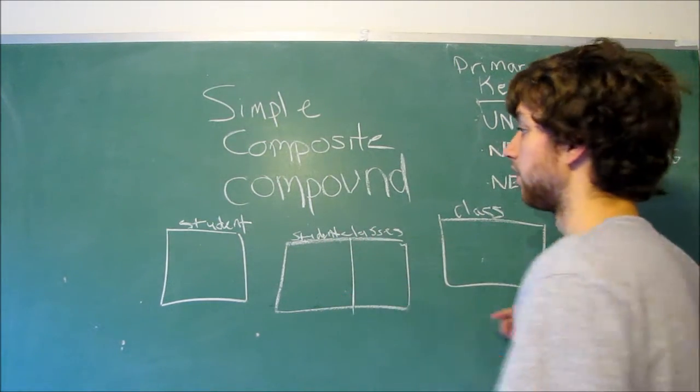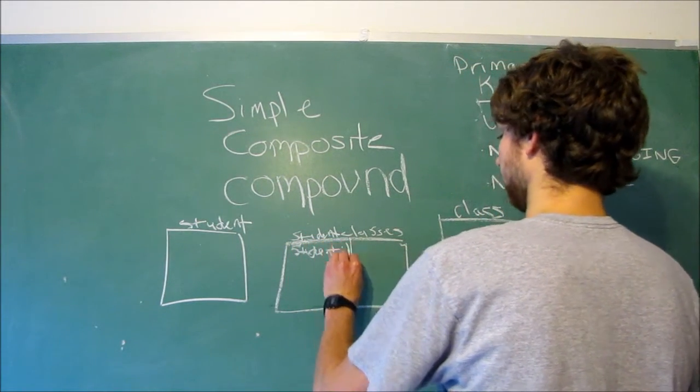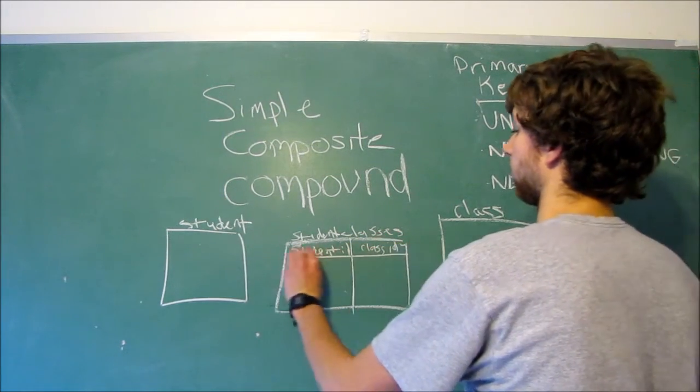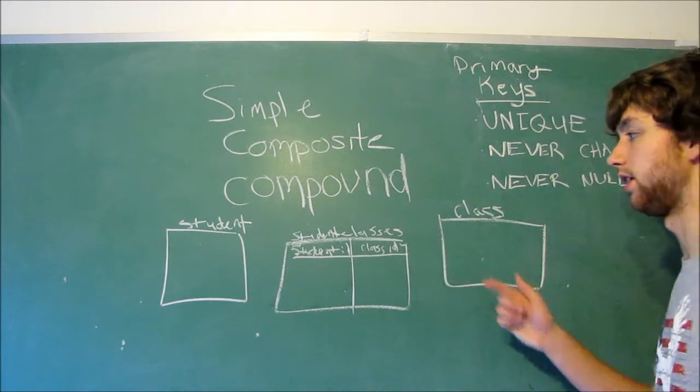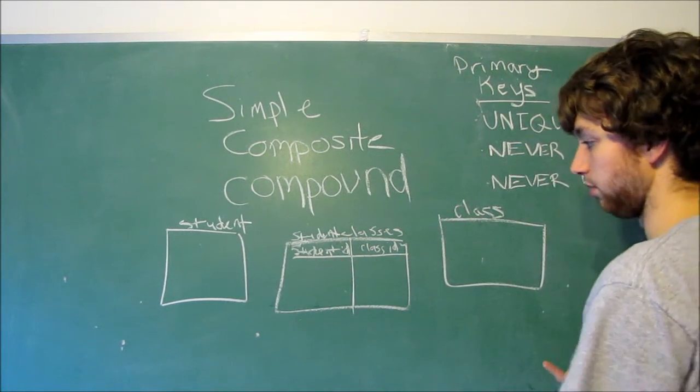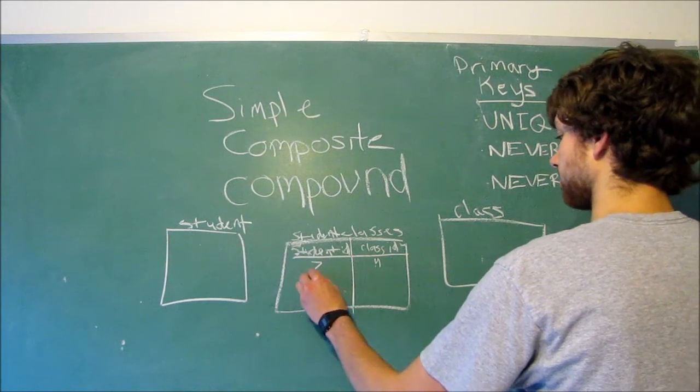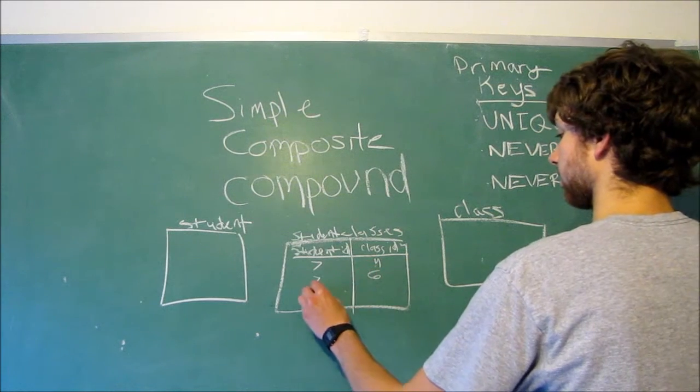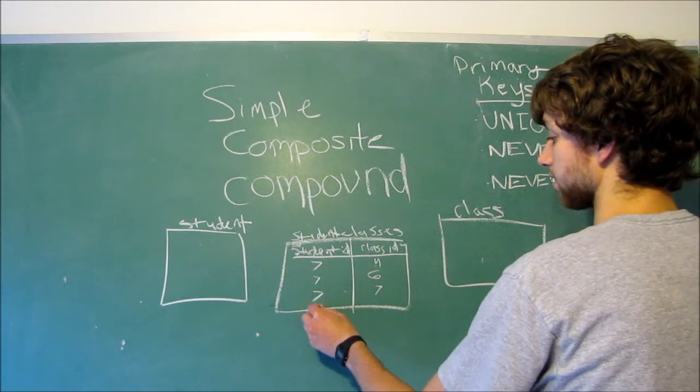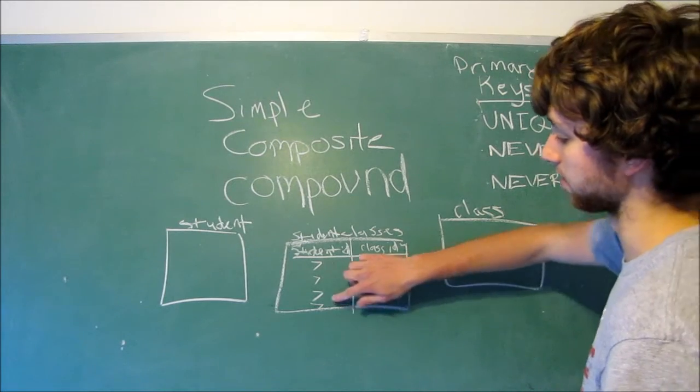And, within here, we could have the IDs, student ID and class ID. Now, this combination between student ID and class ID must be unique. So, let's say we have the values 7 and 4, 7 and 6, 7 and 7. That would work. But, if we had something like 7 and 4 again, we would get an error because that's already in there. And, that's not going to work out so well.